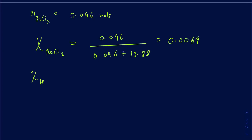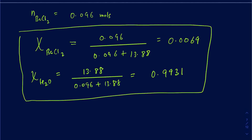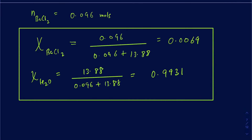To find the mole fraction of water, you can either do 13.88 divided by (0.096 + 13.88), or subtract the mole fraction of BaCl₂ from 1. Either way gives 0.9931 for the mole fraction of water. Mole fraction has no units — it's simply a ratio of moles and is always less than 1.